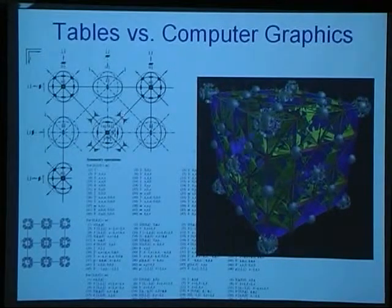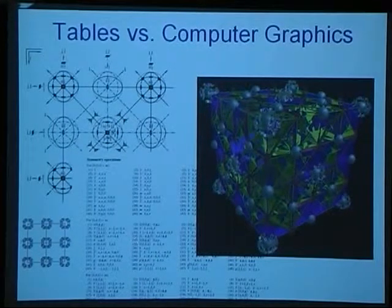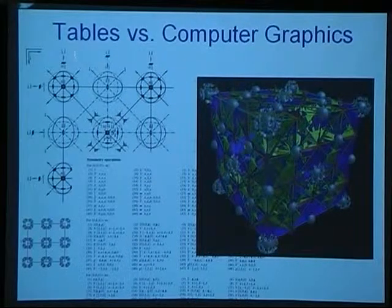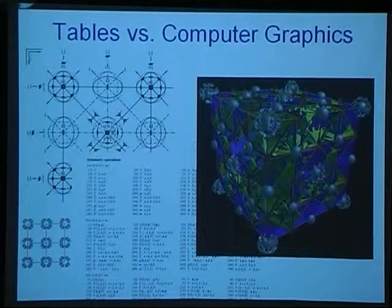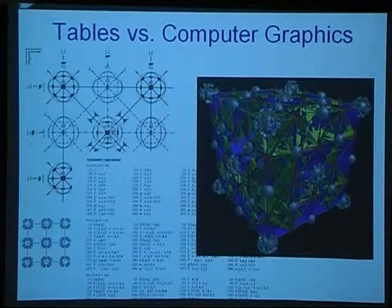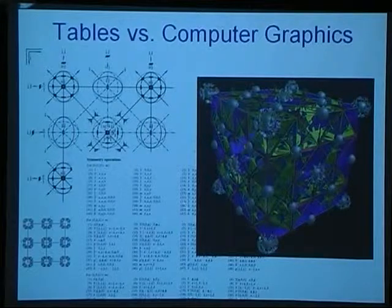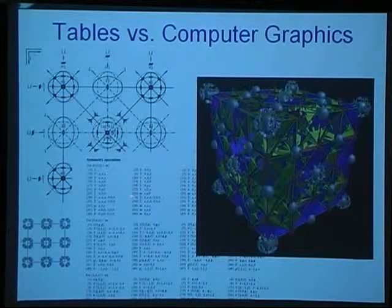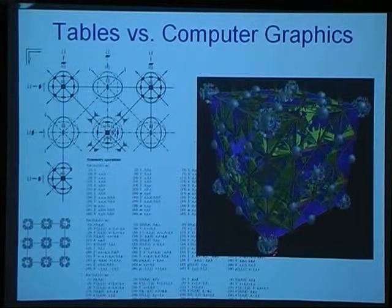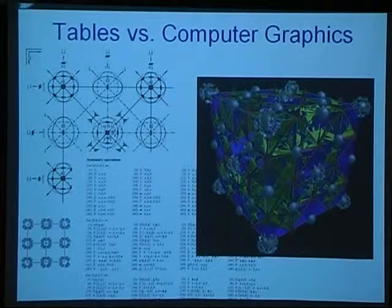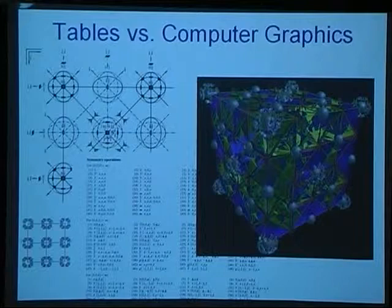The international tables basically look like this. If you want to understand what these symbols are, you have to read a long legend. Then you get this list of general positions and they tabulate all the positions which you see by these small general elements.